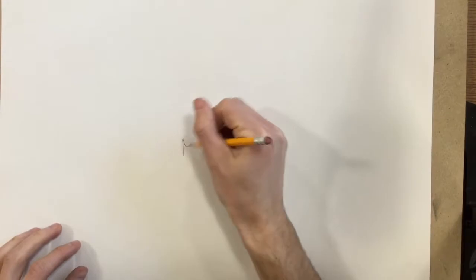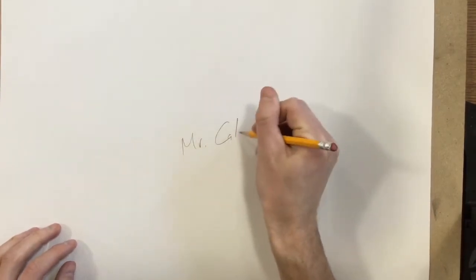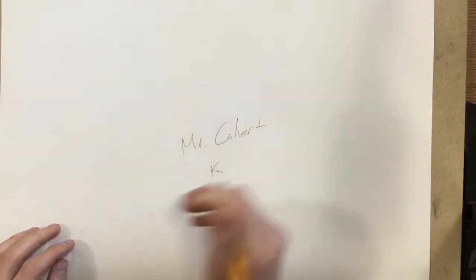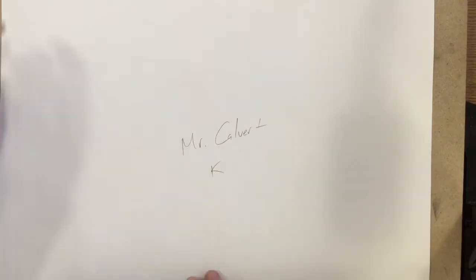Hey Kindergarten! Today you're going to get one big sheet of white paper and we are going to put our name on the back right away. Mr. Calvert, and you need to put either KA, B or C depending on which class you're in.